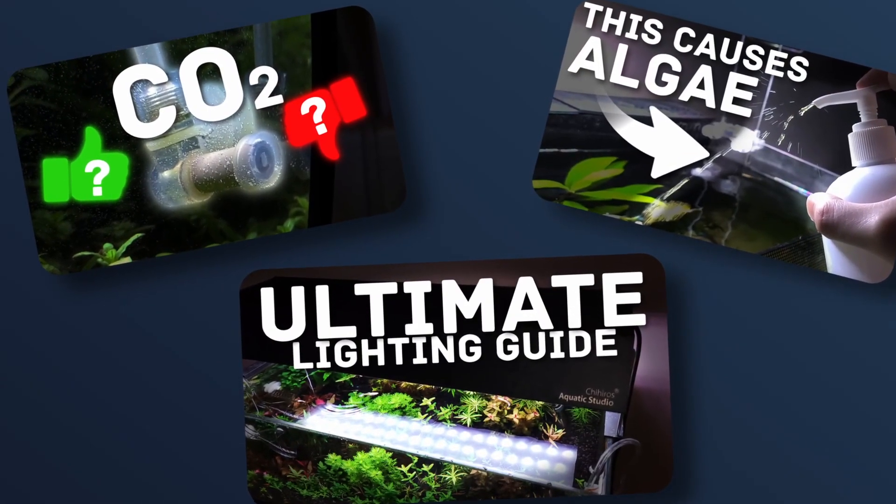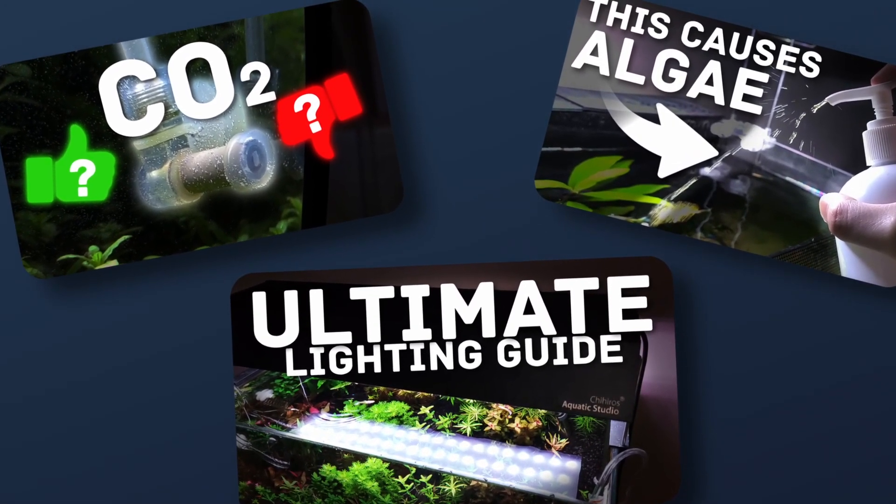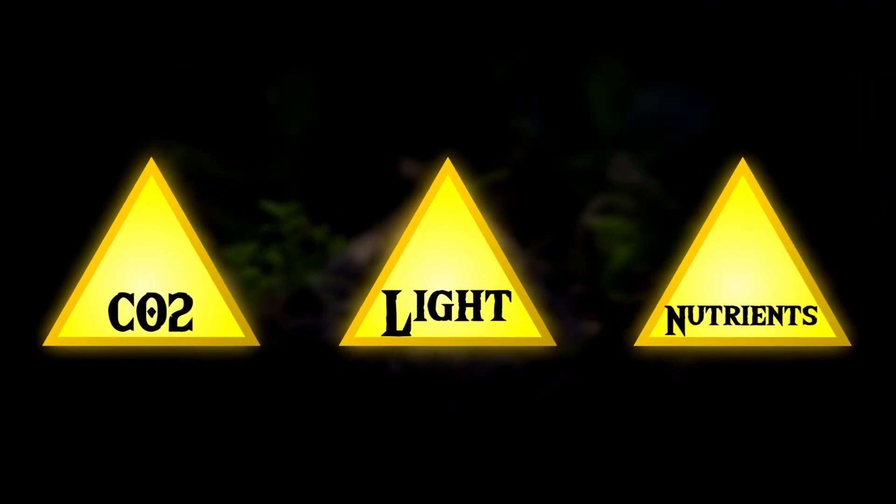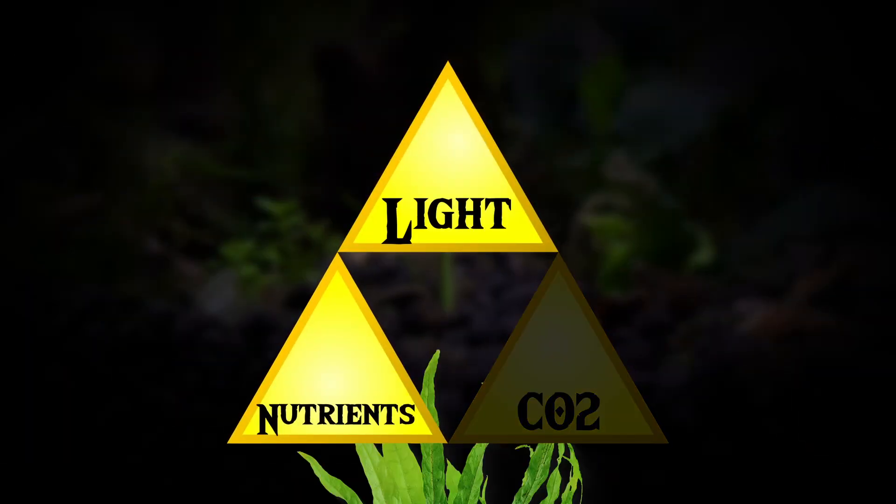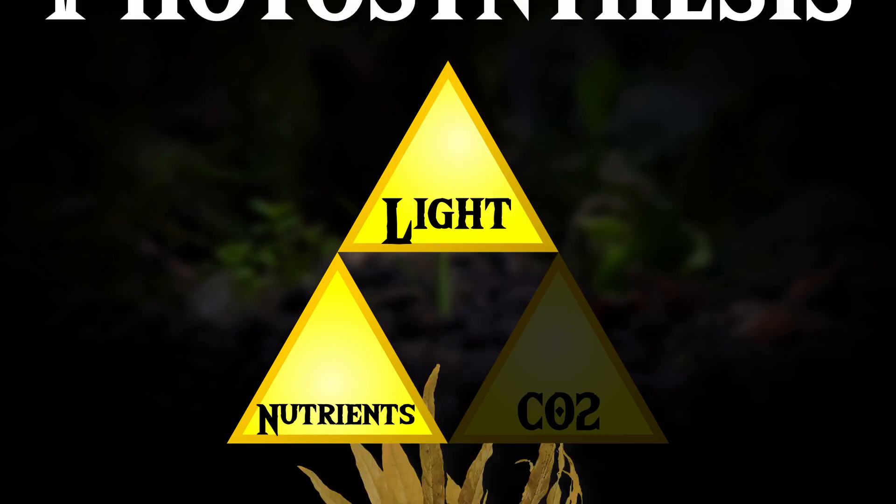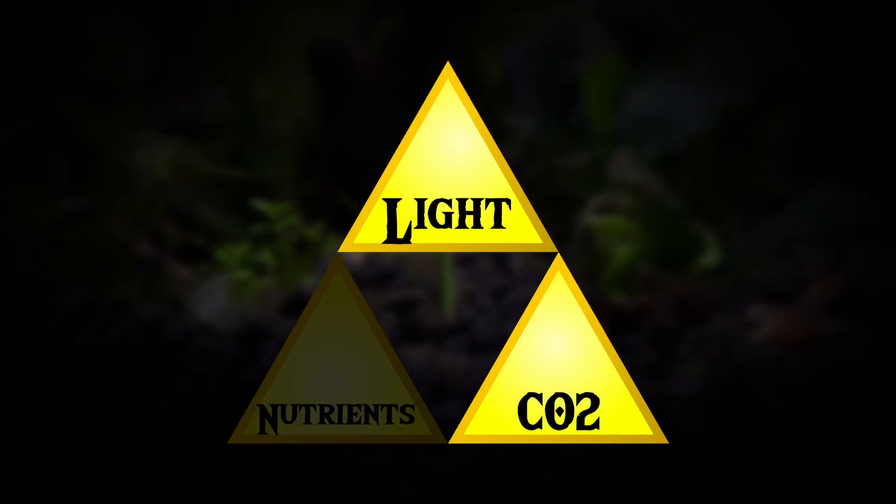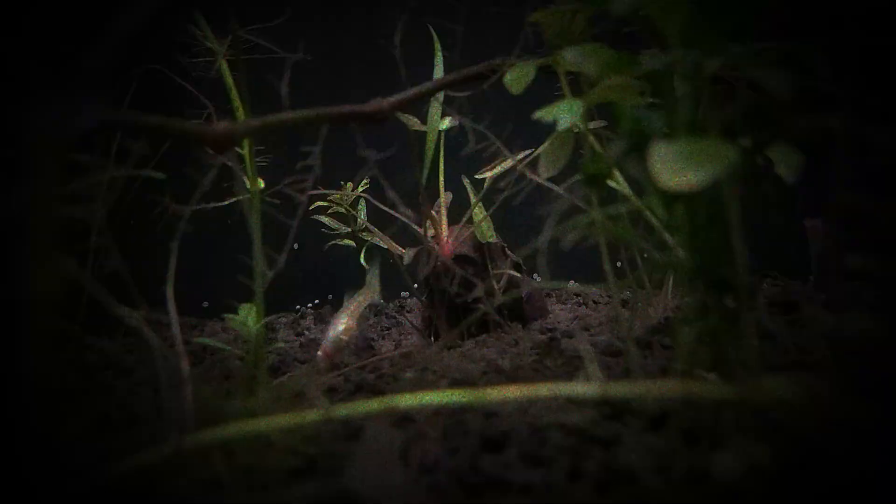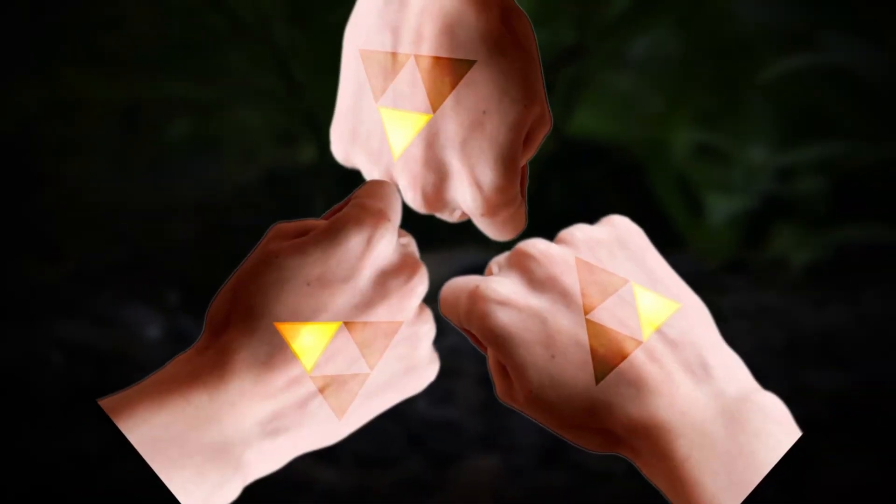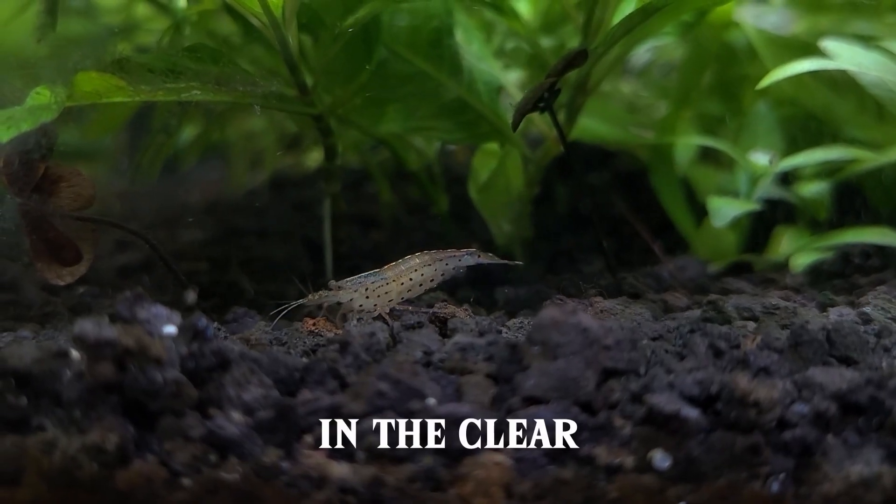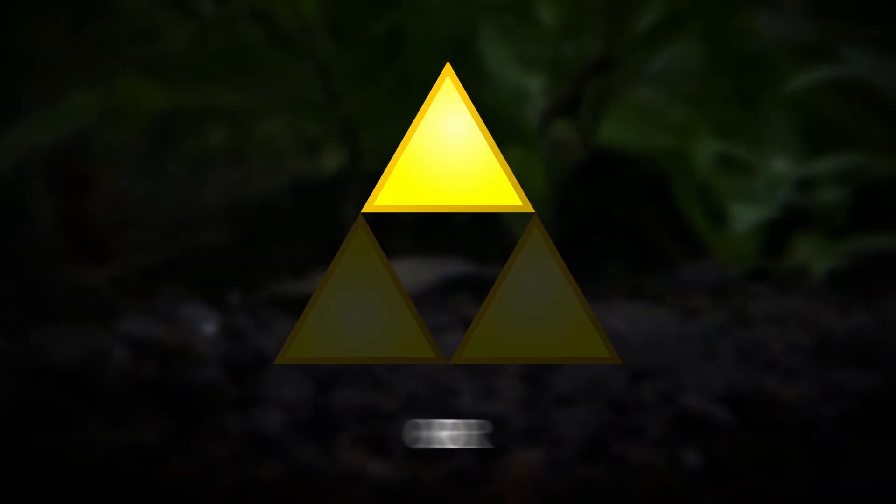I have made extensive videos surrounding these three components, which you can find in the description. Each of these components are all intertwined with one another. Without CO2, plants can't create an adequate amount of food. No light means no photosynthesis, and without nutrients, plant health will deteriorate. Even if you have all three of these elements, you still might not be in the clear if any one of them is weakened or in excess.